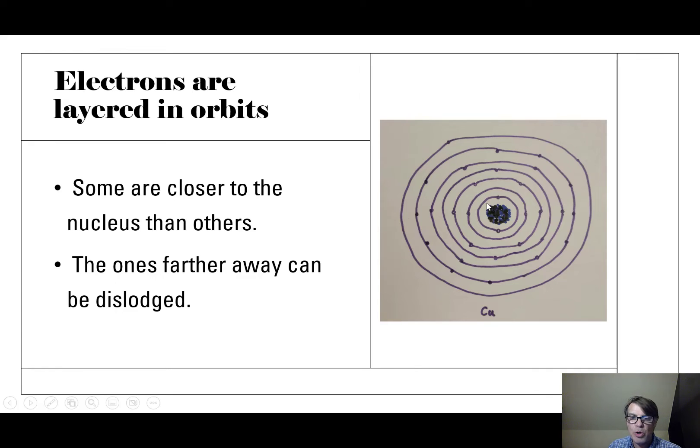What you'll see is that the ones that are farther away from the nucleus, they can be dislodged. So if this is positive, it's really pulling on the electrons that are close to it. But this one electron way out here in the outer shell is not nearly as tightly held by the positive charge of the nucleus. And so this one out here can be dislodged. So when a copper atom loses an electron, it becomes less negative, which means it becomes positive.